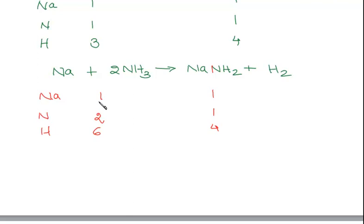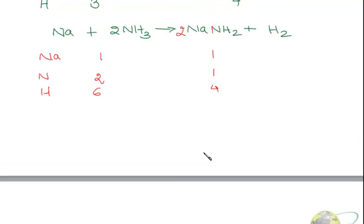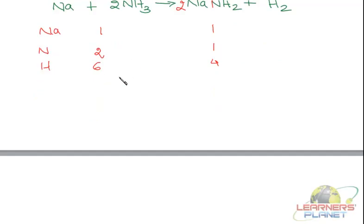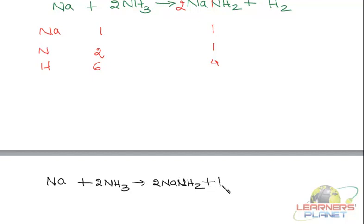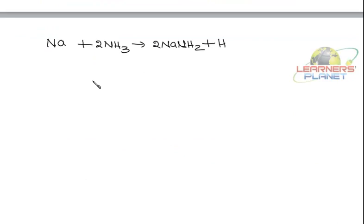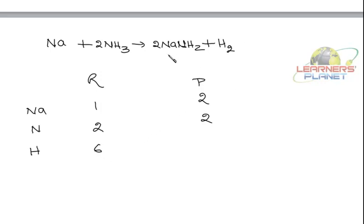Let's first try to balance nitrogen. We can put a 2 where nitrogen is deficient — on the product side. The equation will now become: Na plus 2NH₃ gives 2NaNH₂ plus hydrogen. Again, reactant side and product side: sodium is 1, product side it's 2; nitrogen is 2 and nitrogen is 2; hydrogen is 6. On the product side it is 4 plus 2 = 6.